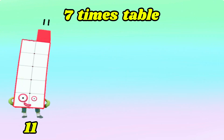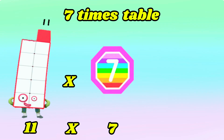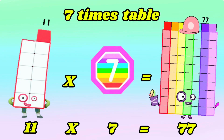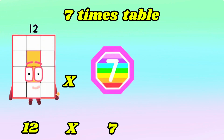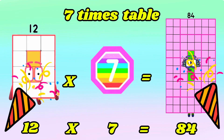11 times 7 is equals to 77. 12 times 7 is equals to 84.